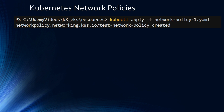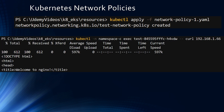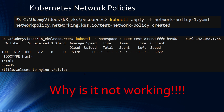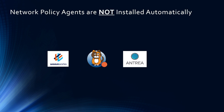Once you have this network policy YAML file, you apply it with kubectl apply -f followed by the network policy filename. But if you apply this policy and then try to ping namespace B pod from namespace C, the curl still goes through. Why is this not working? Because network policies require network policy agents to be effective — these agents enforce the network policies, and they are not installed automatically in your Kubernetes cluster.